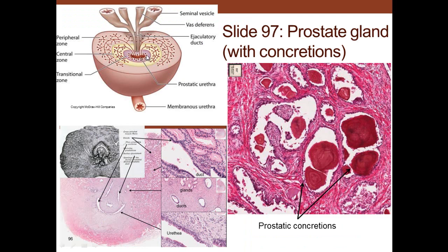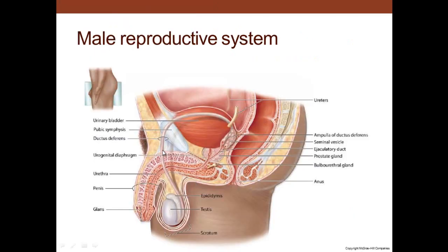The prostate has three regions: the transitional region directly around the prostatic urethra, the central region which contains mostly ducts but can have some glands, and the peripheral region which is the main secretory zone. As the individual advances in age, some of the secretions become concretions - these are calcified concretions located in the secretory space of the prostatic duct, associated with aging.